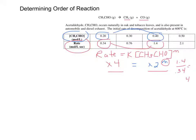So 2 to the m equals 4. So m equals 2. So we ended up with the rate law, or rate expression, that rate equals K times the concentration of acetaldehyde squared.